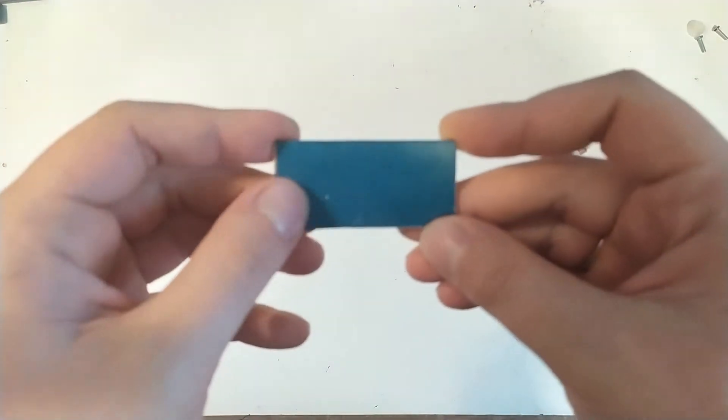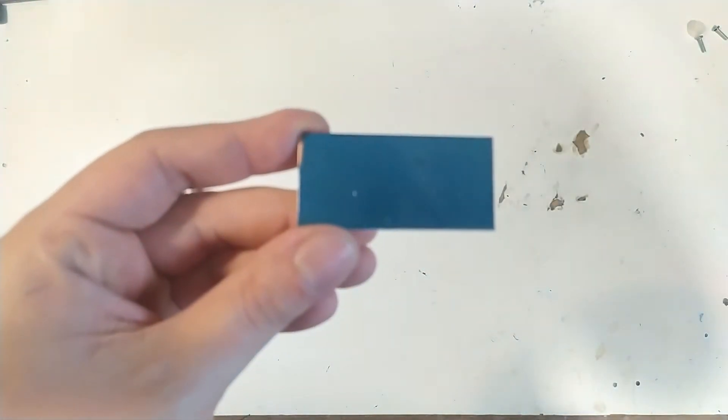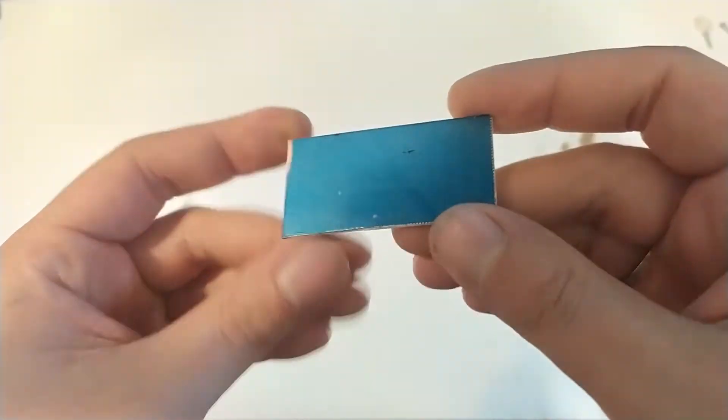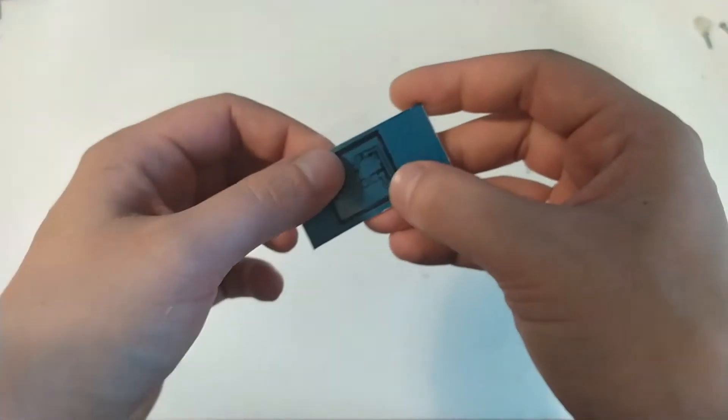Alright, so in the last video we went through the process of getting a piece of circuit board material coated in photoresist that we now need to put our mask on and then expose it, then develop it, and then go into etching.